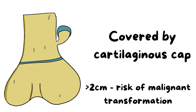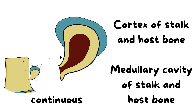To identify the cartilaginous cap, MRI is used — specific sequences are better to assess the thickness of the cartilaginous cap. If the cartilaginous cap thickness is more than two centimeters, it indicates a risk of malignant transformation. It is also to be noted that the cortex and the medullary cavity of the stalk of the tumor are continuous with those of the host bone, confirming it is an outgrowth from the bone.